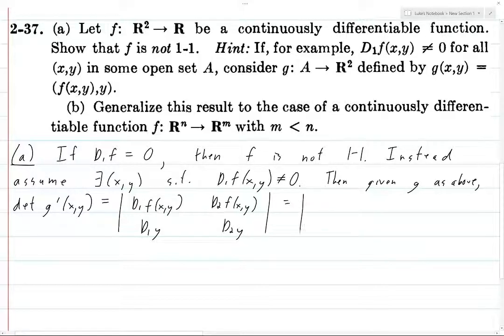So this determinant, we don't know what anything in the top row is. We do know in the bottom row we've got 0 and we've got 1. So now if we take this determinant, we're going to get d₁f(x,y) minus 0 times d₂f(x,y). So this is going to be d₁f(x,y), which we have assumed is not equal to 0.